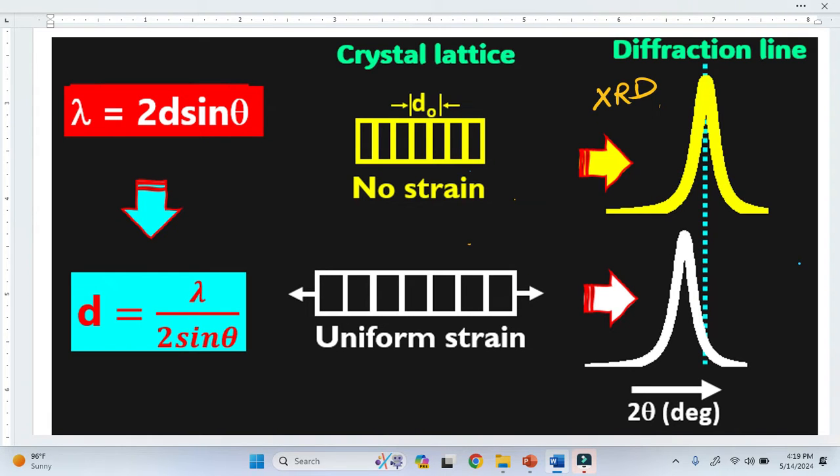We know that strains are in two types: microstrain and macrostrain. In today's video, I am particularly talking about why the peak shifts toward lower 2 theta due to macrostrain.